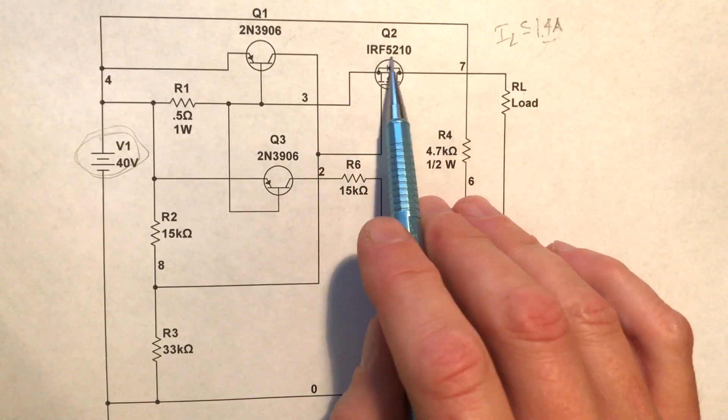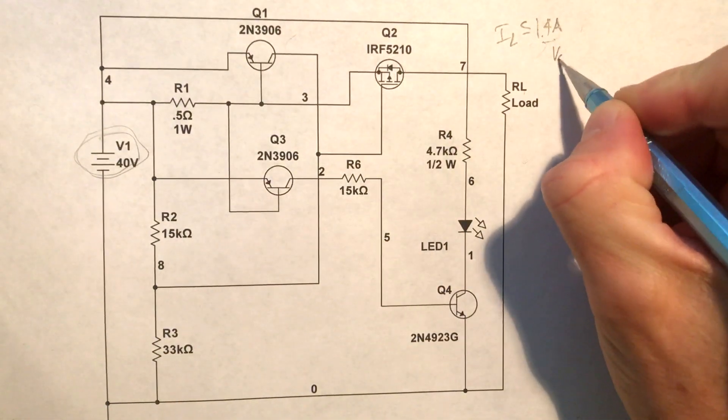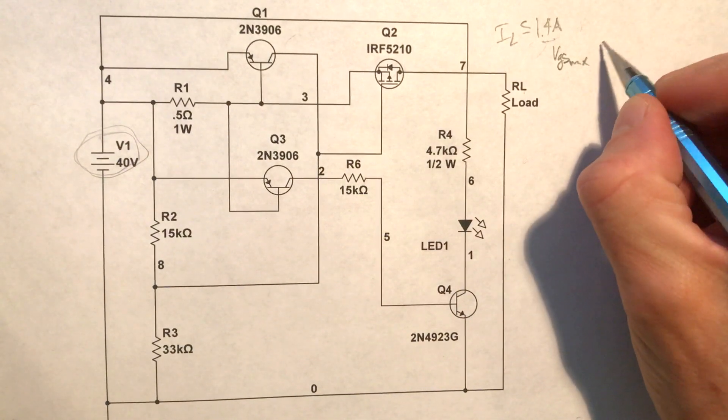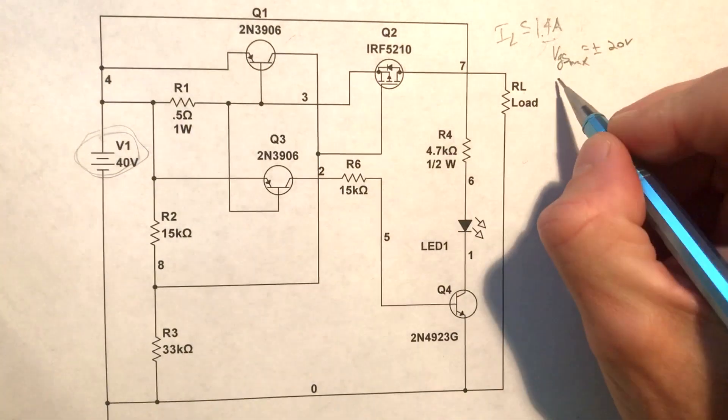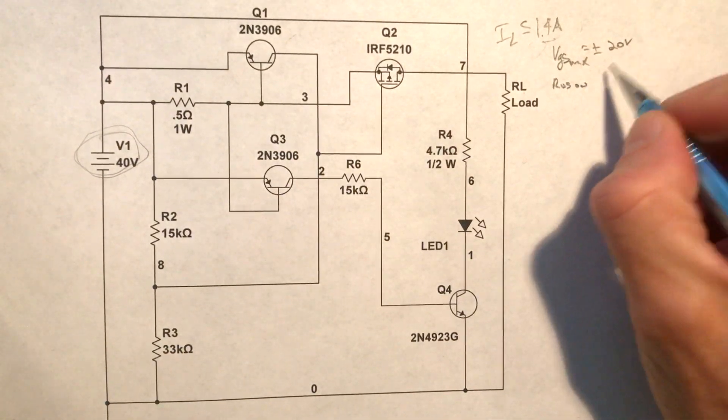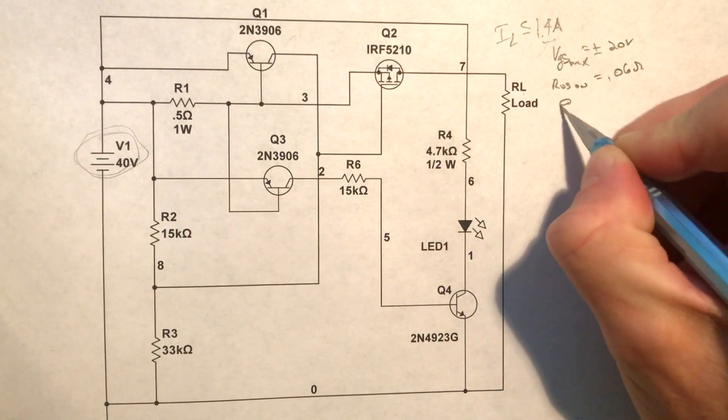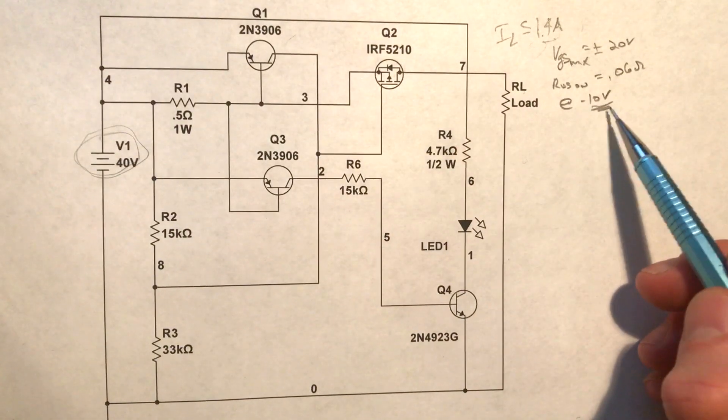All right, so this IRF5210 has a VGS max of plus or minus 20 volts. It has an RDS on I believe 0.06 ohms at minus 10 volts. This minus 10 volts, that's pretty important.